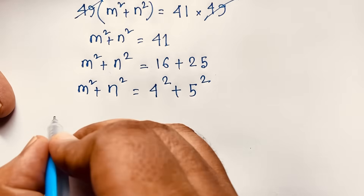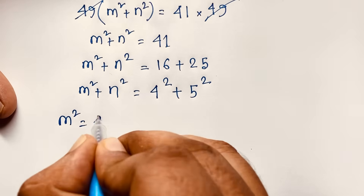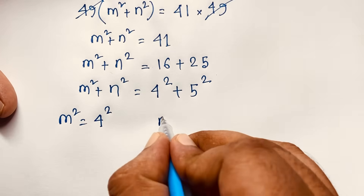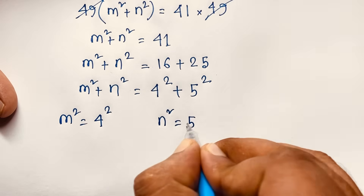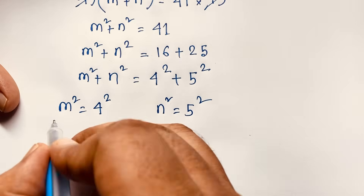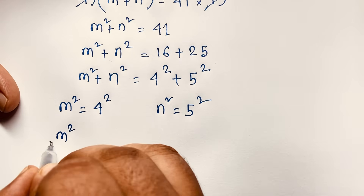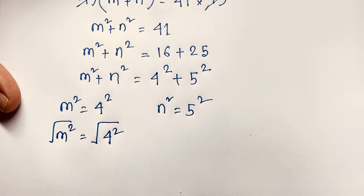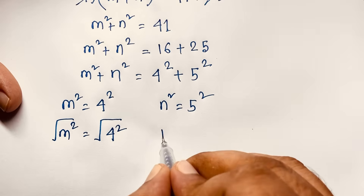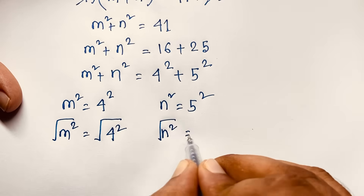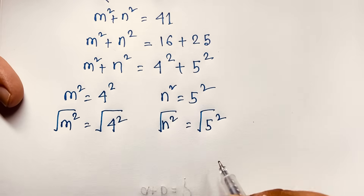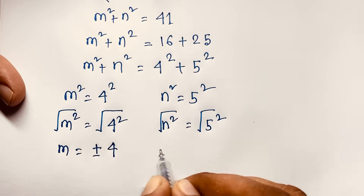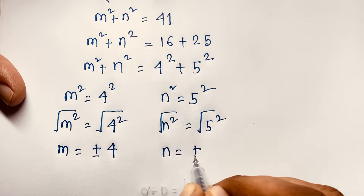So m squared equals 4 squared and n squared equals 5 squared. If I take the square root on both sides, then m equals plus or minus 4 and n equals plus or minus 5.